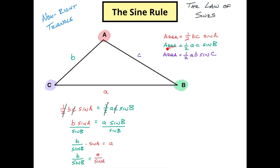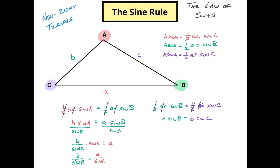Doing the same thing with the other pair of formulas — one-half AC sine B equals one-half AB sine C — after simplifying I get C sine B equals B sine C. Dividing both sides by sine C and by sine B gives C over sine C equals B over sine B. So if B over sine B equals A over sine A, and C over sine C equals B over sine B, that means A over sine A equals B over sine B equals C over sine C.